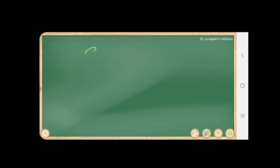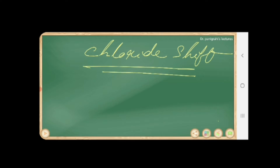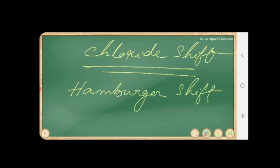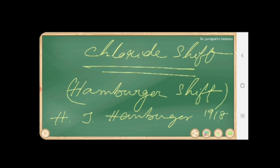In this session I am going to discuss about the chloride shift, also known as the Hamburger shift, because it was first described by the scientist H. Jacob Hamburger in the year 1918.